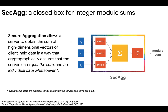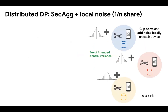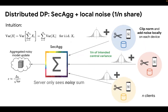Details for SecAgg can be found in the references below. Under SecAgg, we can develop a distributed DP model as follows. Each client continues to clip norm and add noise locally, as in the local DP model. With secure aggregation, each client now adds a very small amount of noise — specifically one-N of the intended central noise variance — and the server will then only see the sum of all the noisy updates, which gives comparable privacy epsilon as if we were running the central DP model. This works intuitively because the variance of the sum is the sum of the variances of the individual noise shares.